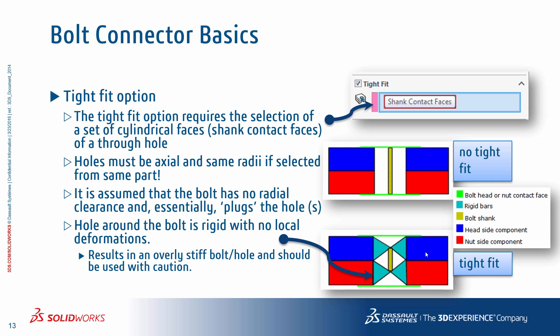You might be wondering whether without the tight fit option it's really necessary to have the cylindrical holes in the geometry. The way bolt connector definitions are implemented requires a selection of circular edges for the bolt head and nut. So if you want to get away with it, you have to create that circular edge by using a split line operation on the desired face where the bolt head sits or where the nut might actually be in contact with.